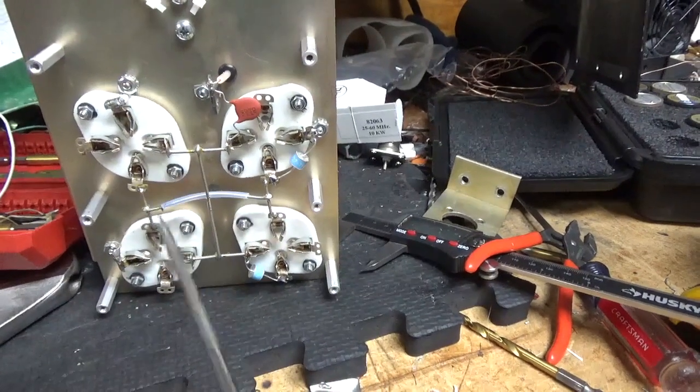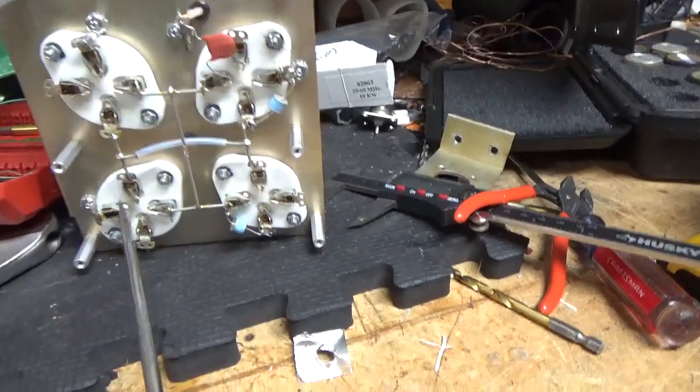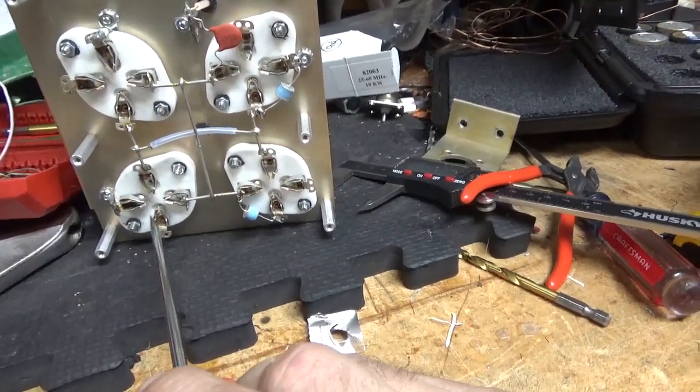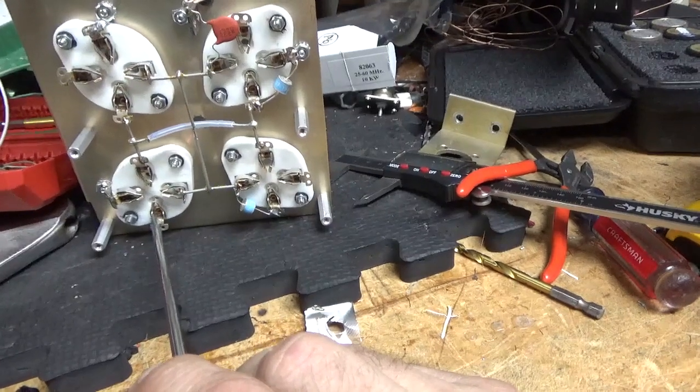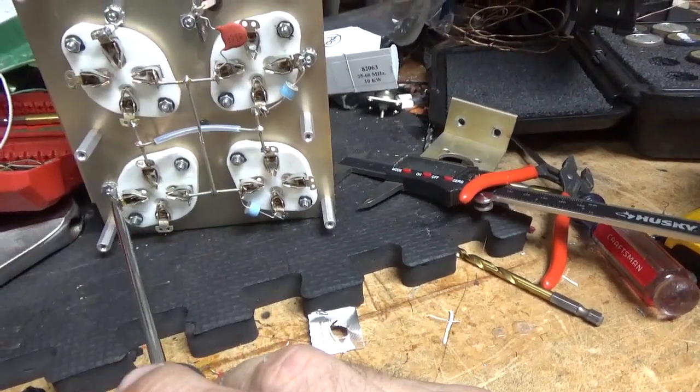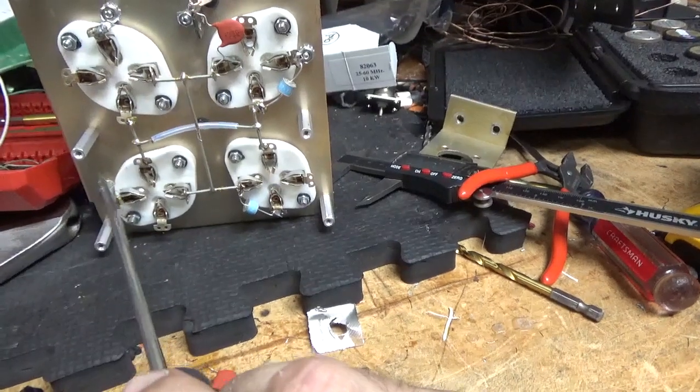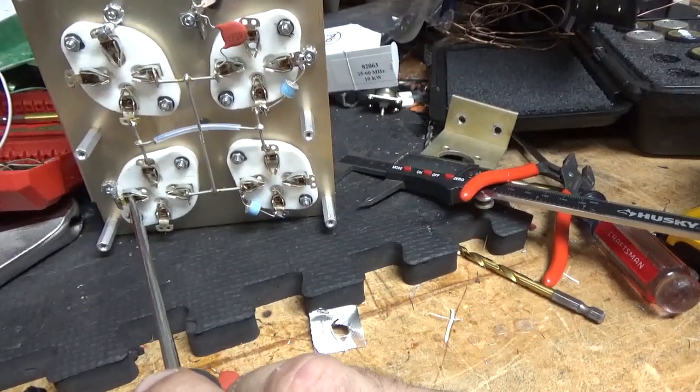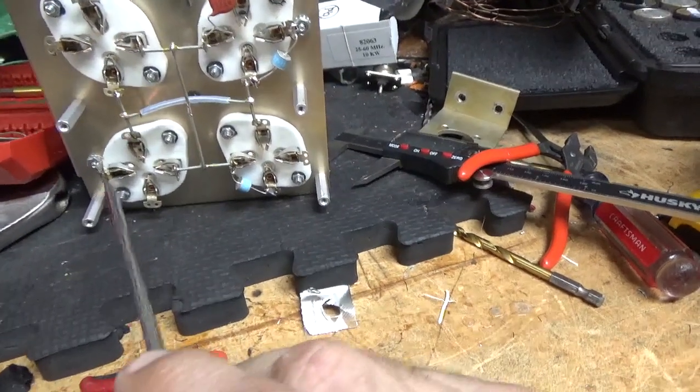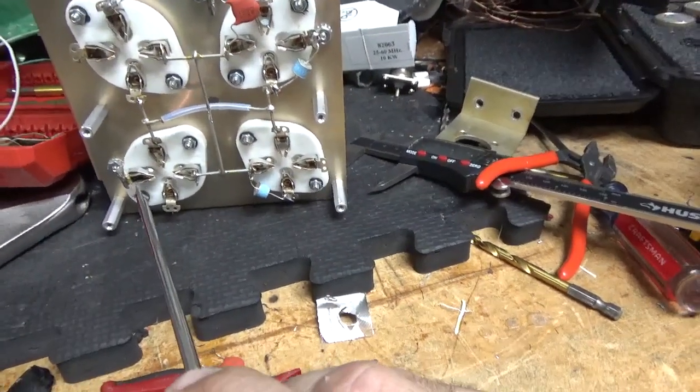These are super tight. People say, well, there are four pins on each socket. Like I said before, two of them are for the filament. One does nothing within the tube. It's not electrically connected to anything. And then you have the grid connection. It's very important to maintain that one grid pin to ground. You don't want to have a bad connection there. You'll end up destroying the tube.